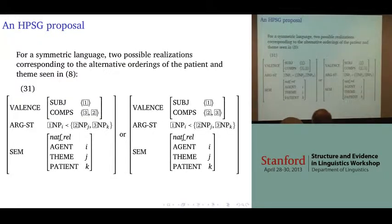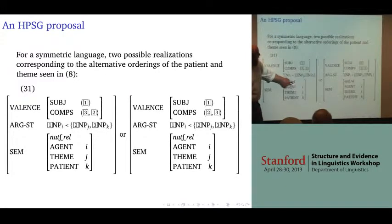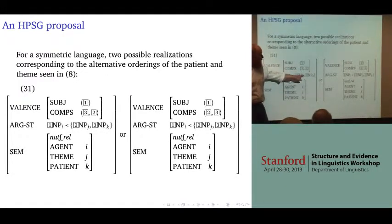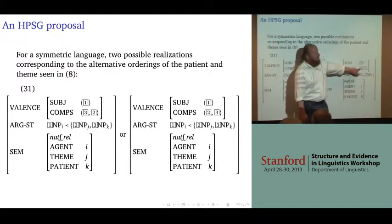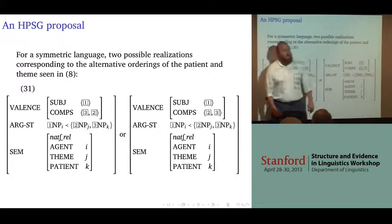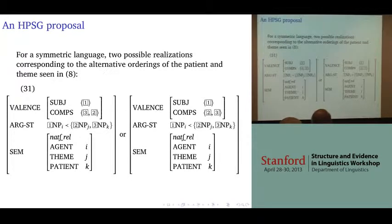In a language like Moro, the argument realization principle gives us two possible realizations: either the theme argument could wind up as the second complement and the patient as the first, or the theme as the second and the patient as the second. Either of those is a possible linear extension of the partially ordered argument structure.